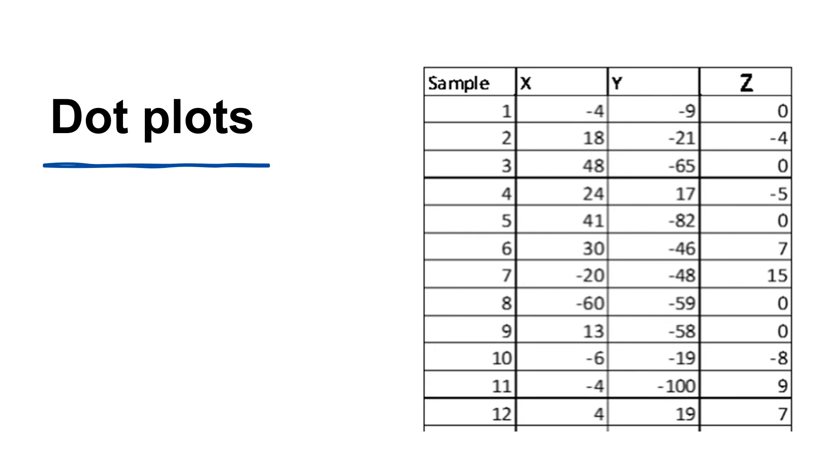Suppose we want to study the dimension of a component. We select 15 samples, then measure this one. Because this sample is too small to create a useful histogram, is there any other graph we can use to display the data?